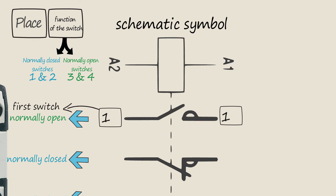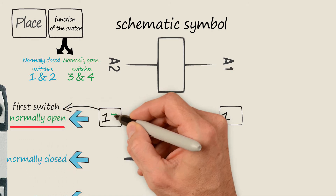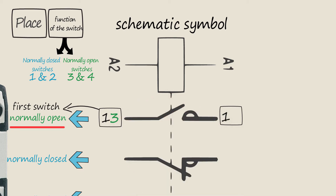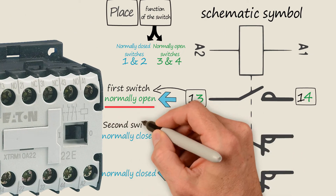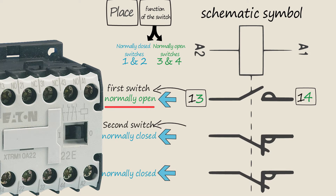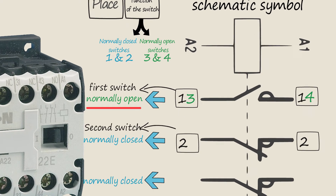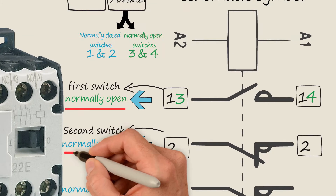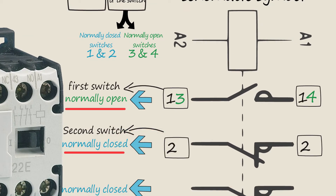Because the first switch is normally open, these terminals will be one-three and one-four. This is the second switch connected with this relay. Each terminal of this specific switch is given two as the first digit. Because the second switch is normally closed, these terminals would be two-one and two-two.